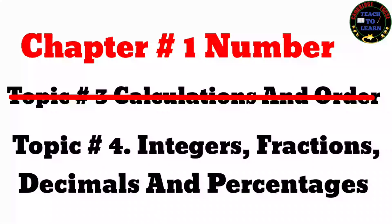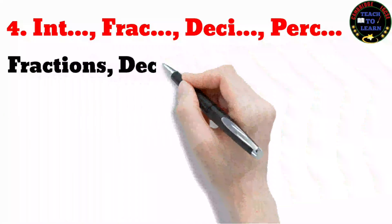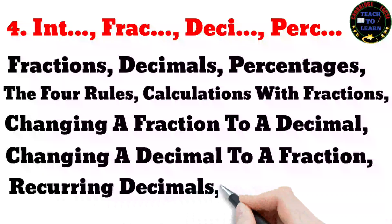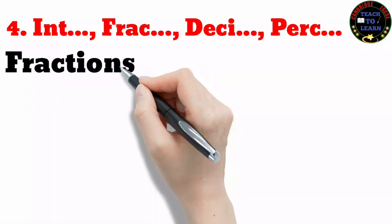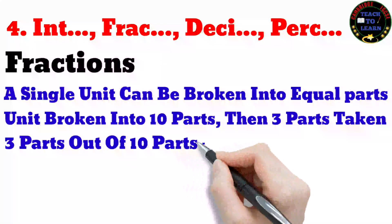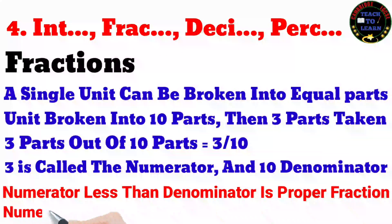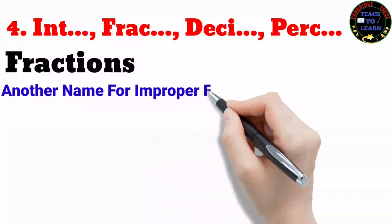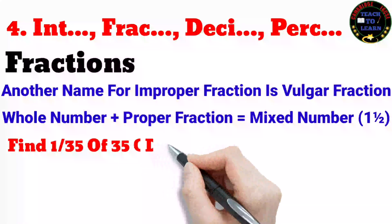Topic four: integers, fractions, decimals and percentages. In this topic we are going to learn about fractions, decimals, percentages, the four rules, and calculations with fractions. A single unit can be broken into equal parts called fractions. For example, if a unit is broken into 10 equal parts and three parts are taken, the fraction is written as 3/10 — three parts out of ten. The 3 is called the numerator and 10 is called the denominator. A proper fraction has its numerator less than its denominator; an improper fraction has its numerator more than its denominator.